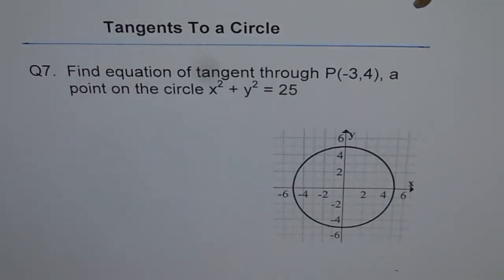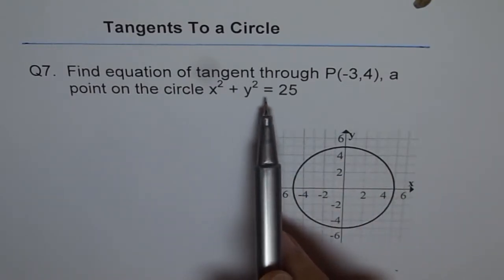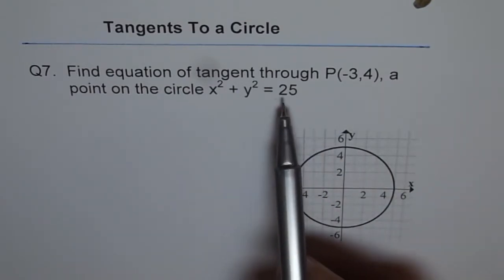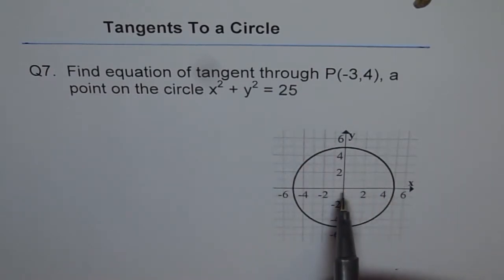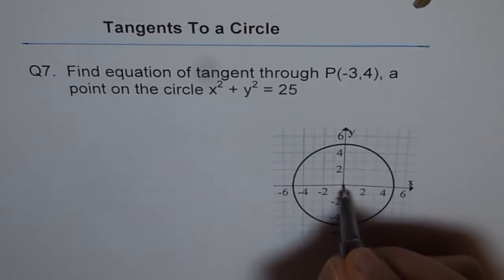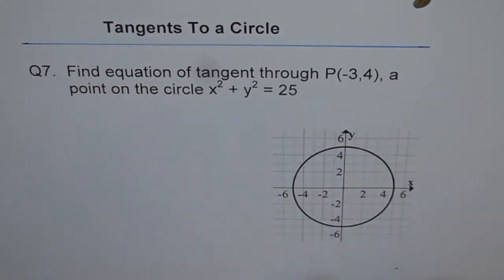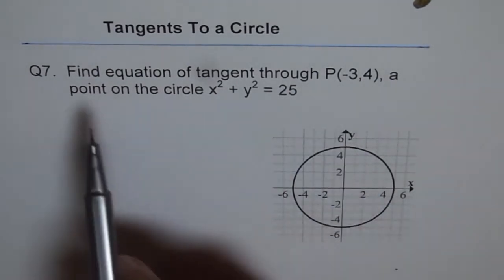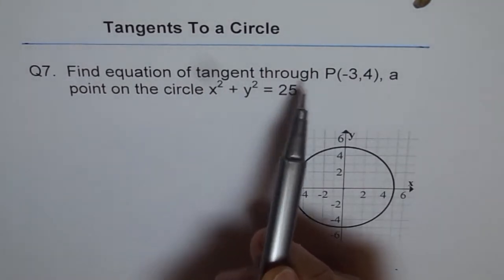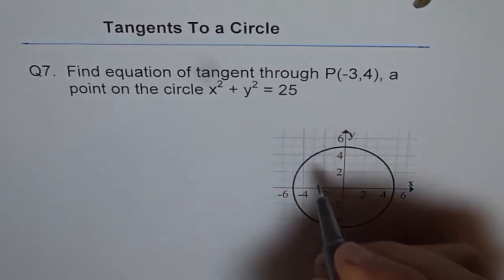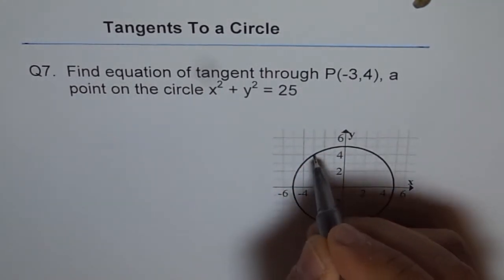So now here we are given a circle which is x² + y² = 25. So that means the radius of the circle is 5 and the center of the circle is at the origin. So that's the center of the circle at the origin and the radius is 5. You can see the radius is 5. Now, you need to find equation of a tangent through point (-3, 4). So point (-3, 4) is this point.